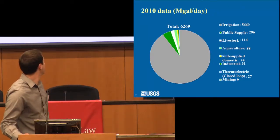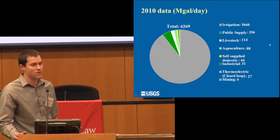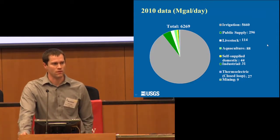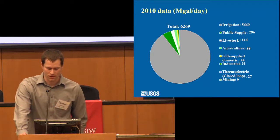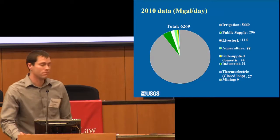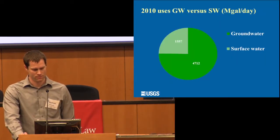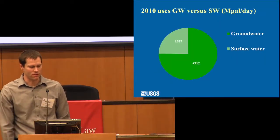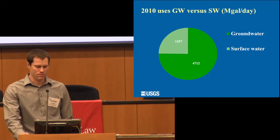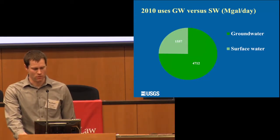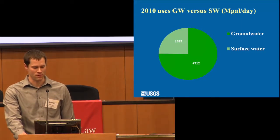Here's our 2010 data. Not surprisingly, irrigation dominates — that's why most talks today are about irrigation. Public supply was second, livestock third, and all the rest were below 100 million gallons per day. There's a breakdown of groundwater versus surface water — about a 75 to 25 split — which, with such a large portion of the High Plains aquifer in our state, shouldn't surprise anyone.